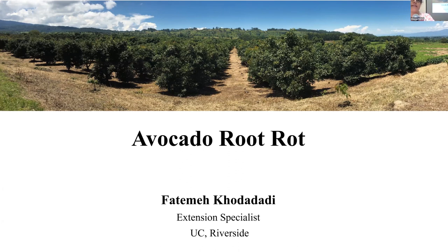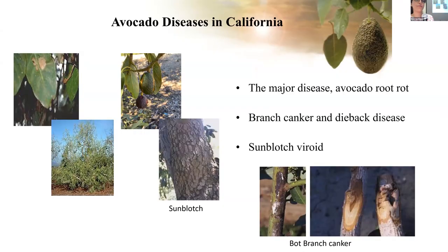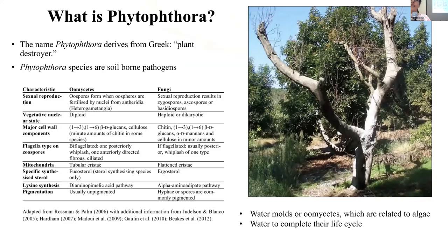Today I'm going to cover some basics about Phytophthora root rot — a disease I'm sure you've all come across at least once. Avocados are subject to many pests and diseases, but the most important disease is avocado root rot. That doesn't mean we should undermine the presence of other diseases, like Botryosphaeria branch canker and dieback, or avocado sunblotch viroid, which I personally call the silent threat — a disease many growers have reached out about since I started this position. Anyway, if you want to fight an enemy, know it well first.